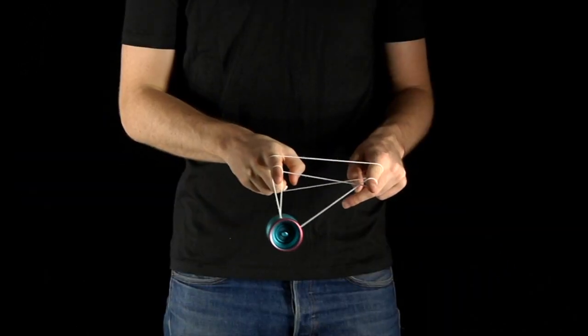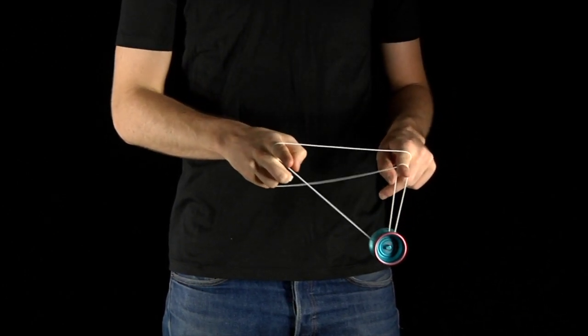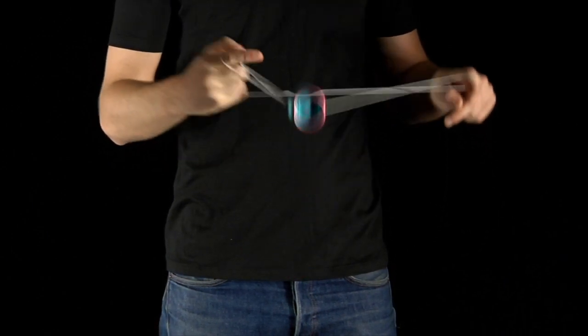Repeat this motion and land in a double or nothing. Repeat again and land in a trapeze and his brother. Repeat once more finally landing in a trapeze.